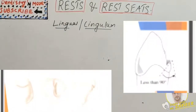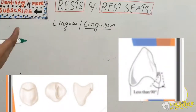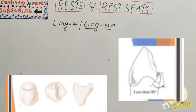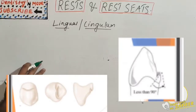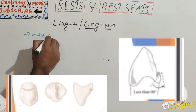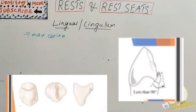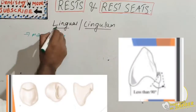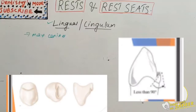The lingual or cingulum rest is a metallic extension of a partial removable dental prosthesis framework that fits into a prepared depression within an abutment tooth's lingual surface. Lingual or cingulum rests are used primarily on maxillary canines. The thickness of enamel on the lingual surface of mandibular canines rarely allows a lingual rest to be used. Lingual rest provides improved aesthetics — the most striking feature of this type of rest.